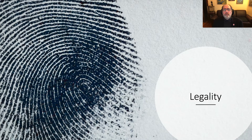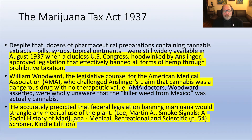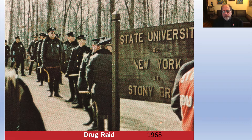After that, we'll move on to the legal aspects of the area of the research. From 1850 to 1936, cannabis was a common medicine in the United States, and companies like Lilly and Pfizer had products they used for various conditions, including cough. That came to an abrupt halt with the Marijuana Tax Act of 1937, and we'll go over these political things that happened.